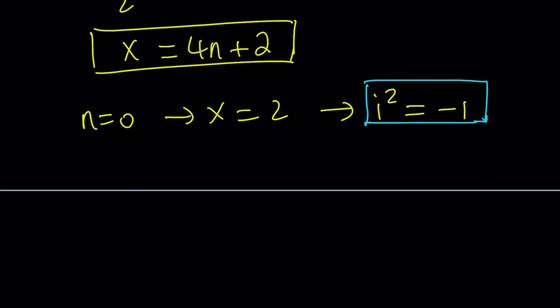i is one of the square roots of negative 1. A lot of times people say it is the square root of negative 1, but that's not true. Negative 1 has two square roots, i and negative i. Because when you square both, when you square either number, you get negative 1.